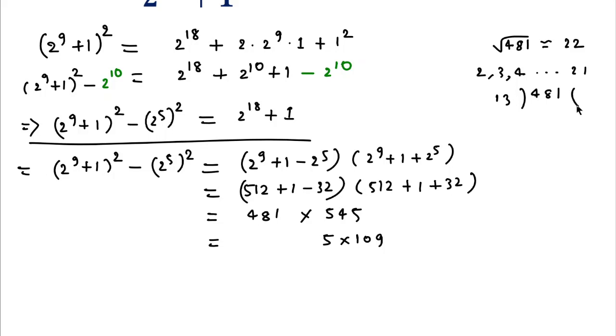481 divided by 13 gives 37. So we can write 481 as 13 × 37. Therefore, the prime factors of 2^18 + 1 are 5, 13, 37, and 109. This is your answer.